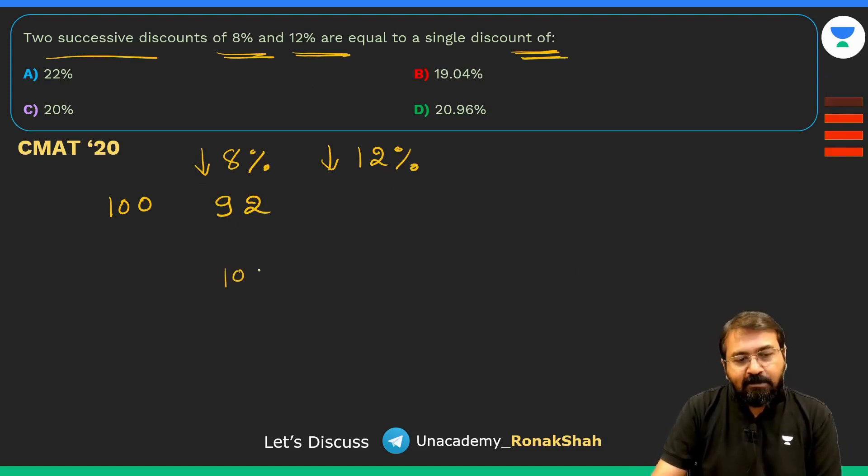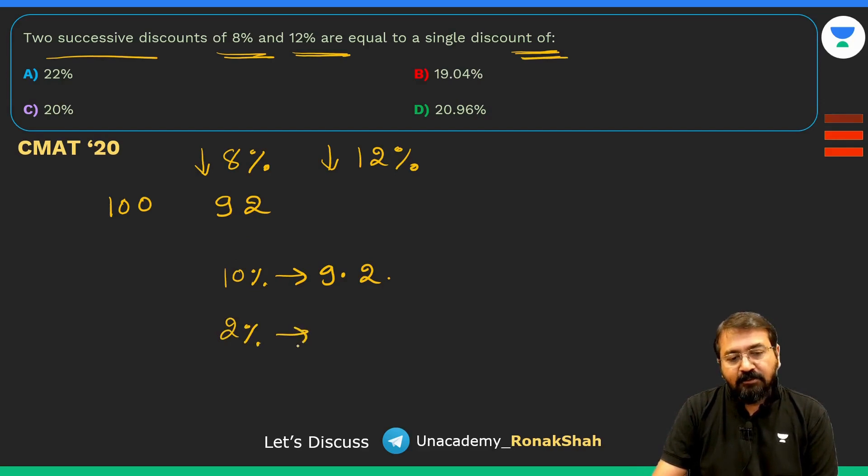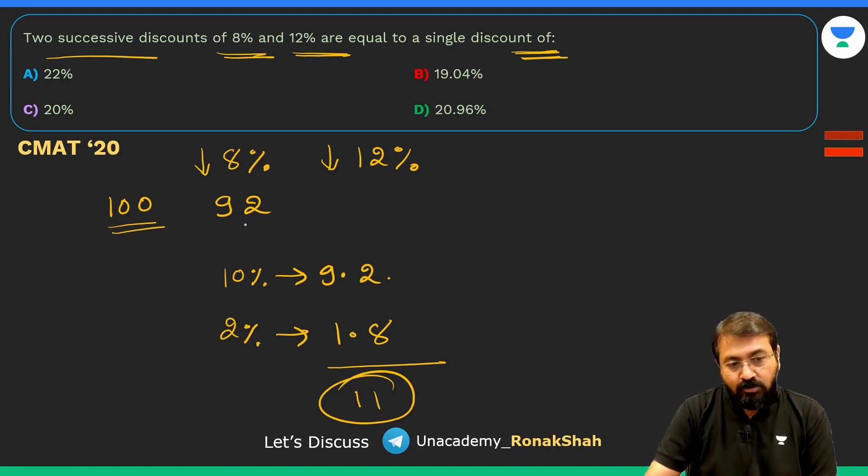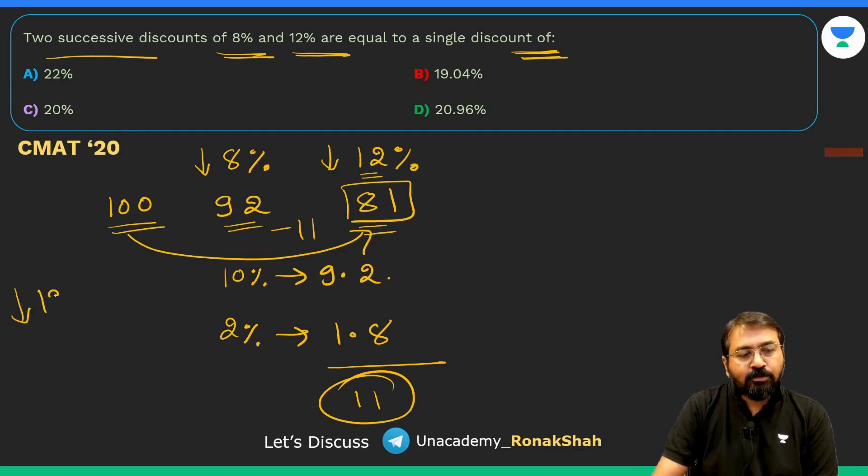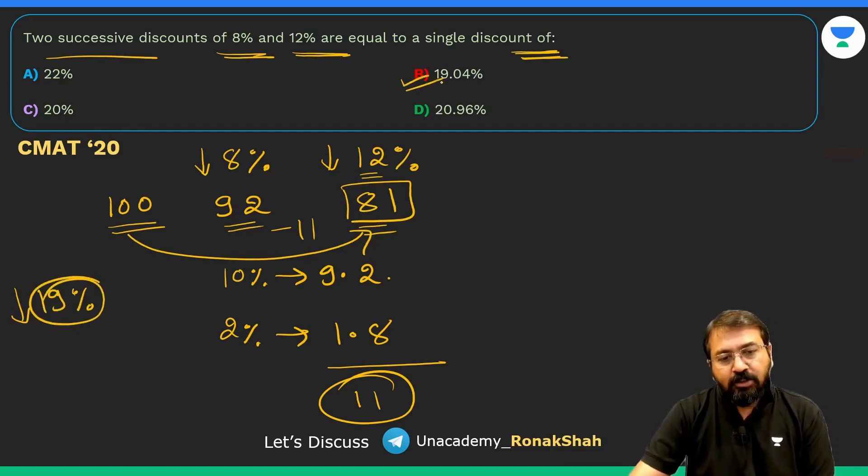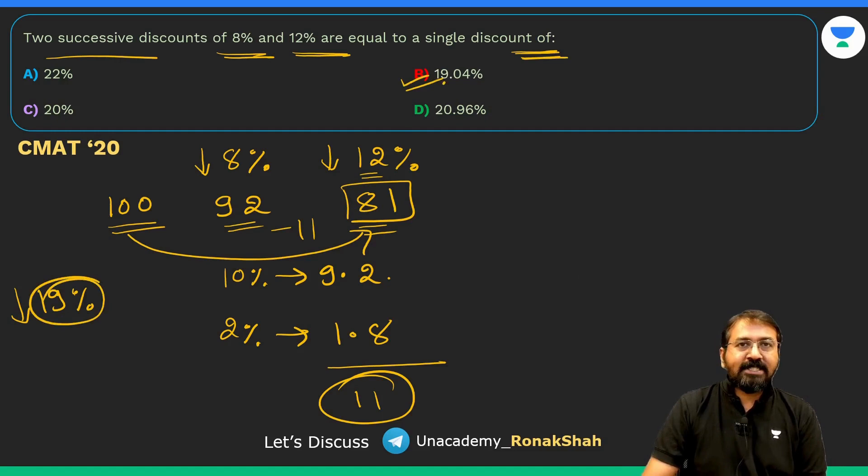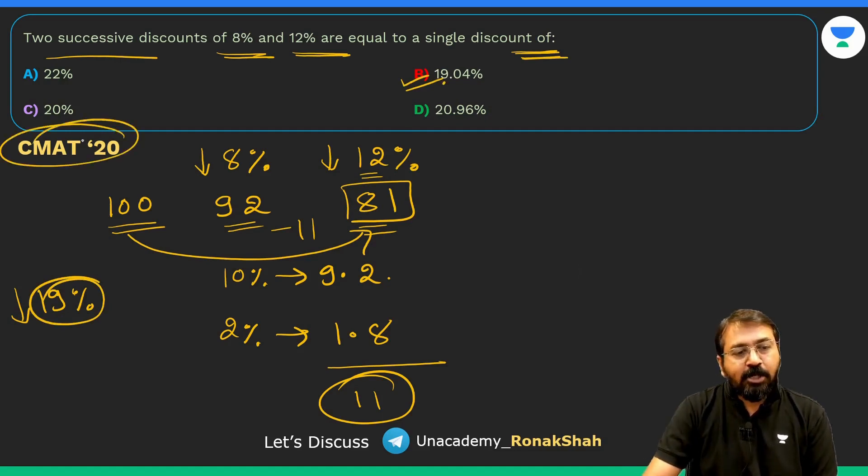What is 12% of 92? 10% of 92 will be 9.2, 1% of 92 is 0.92, so 2% will be 1.84, so just write down 1.8. This is going to be approximately 11, so my value 92 will decrease by further 11, so it will become 81. 100 has become 81, so can I say it has reduced by approximately 19%? Here is the option 19.04%.